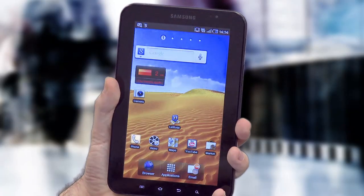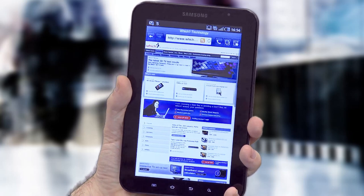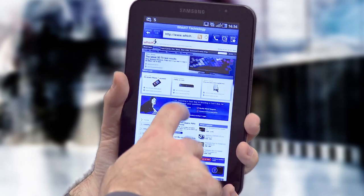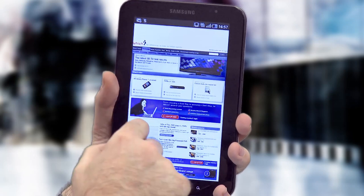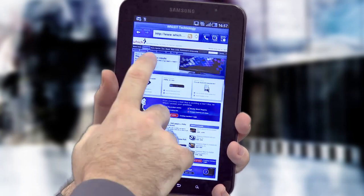A Samsung Galaxy Tab is of course a great window onto the web. The 7-inch screen makes viewing the web on this device much better than most mobile phones.